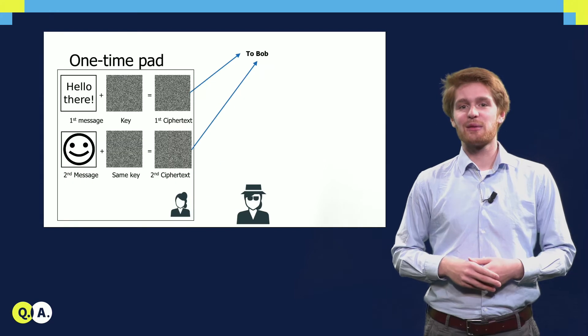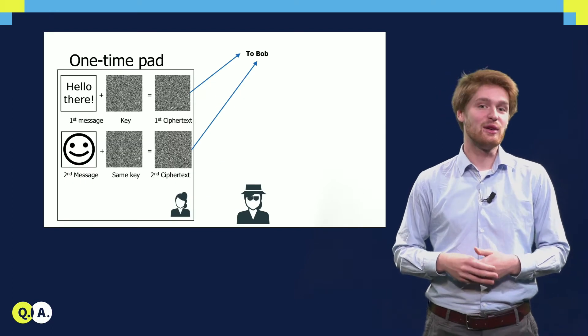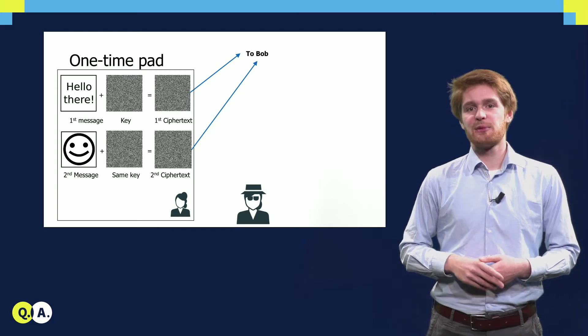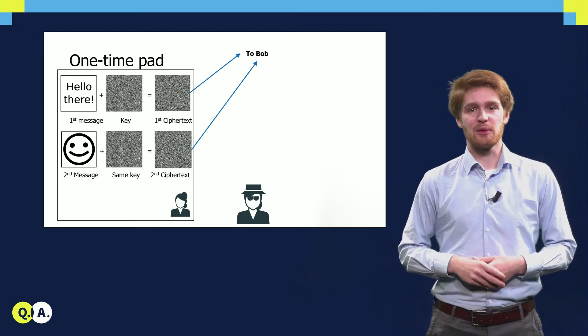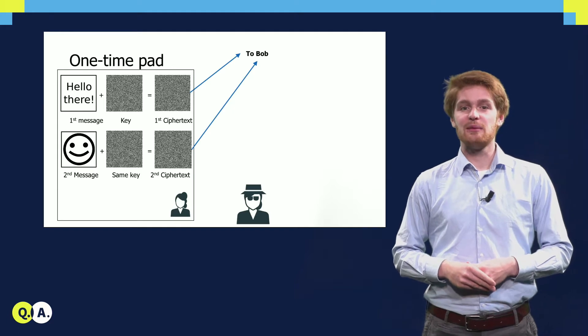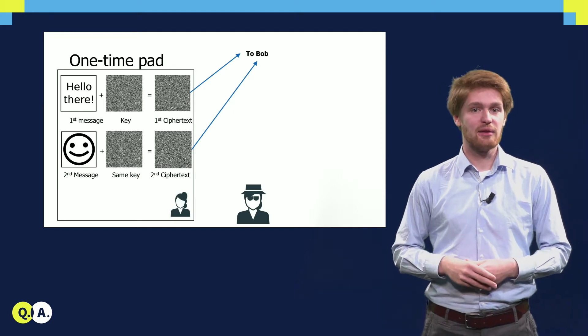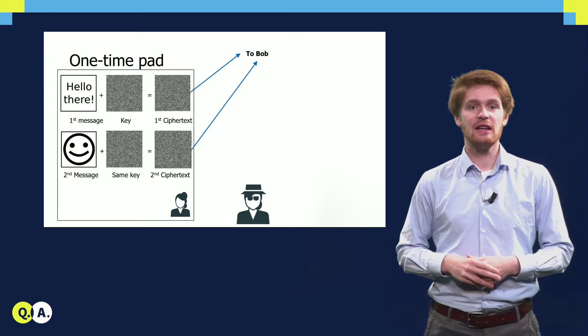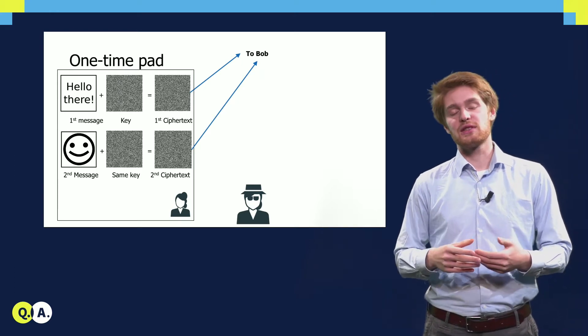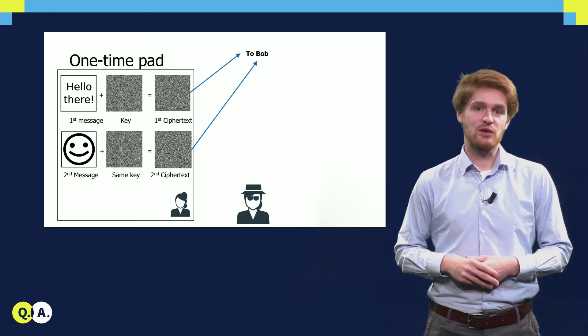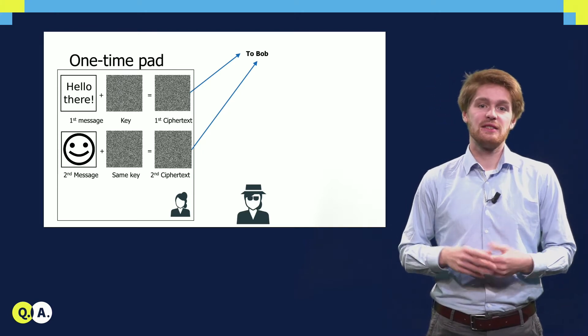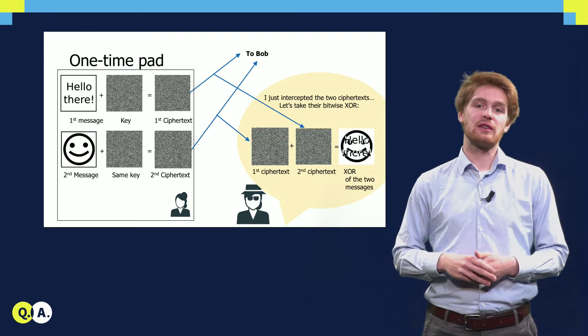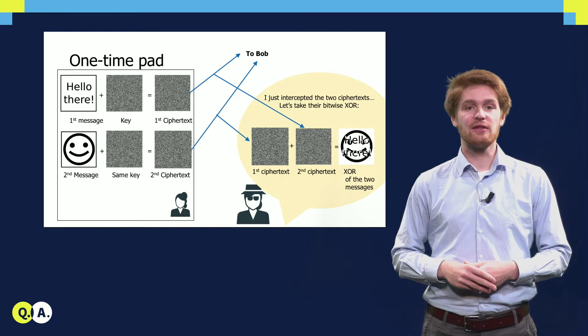You probably already guessed from the name that a one-time key may only be used once. Let us see with an example why this is the case. Suppose that Alice wants to send a second message to Bob and uses exactly the same key as she had before. She goes through the same procedure with the pixelwise-xor of the key and the message, and this produces a second ciphertext, which she also sends to Bob. Since Eve has access to all communication channels between Alice and Bob, Eve also intercepts this message.